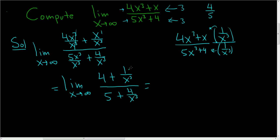So as x approaches infinity, this term approaches 0, this term approaches 0. So we end up with 4 plus 0 over 5 plus 0, which is 4 over 5.